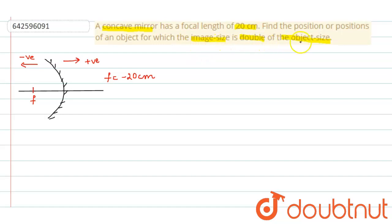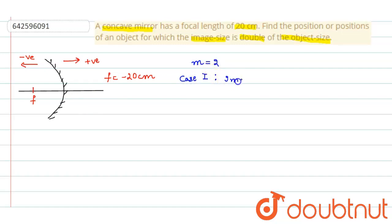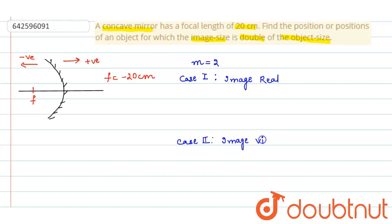It is given that the image size is double the object size, which implies that the magnification m is 2. We have two cases: Case 1 — the image formed is real, and Case 2 — the image formed is virtual.